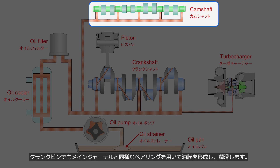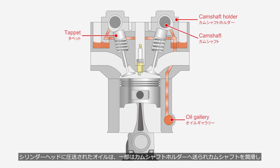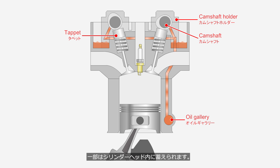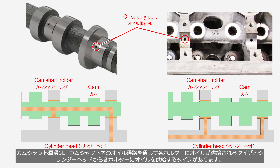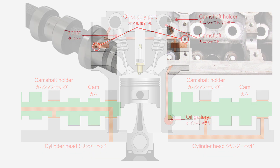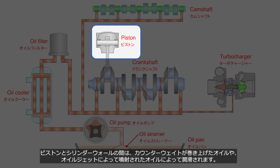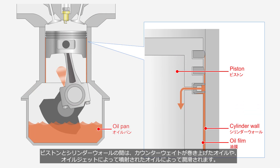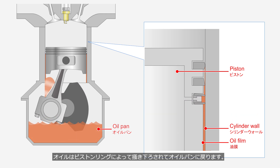The oil in the oil gallery is also sent to the cylinder head. The oil pressure fed to the cylinder head is partially directed to the camshaft holders to lubricate the camshaft, while the remainder is retained within the cylinder head. Camshaft lubrication can be classified into two types: one in which oil is supplied to each holder through oil passages inside the camshaft, and another in which oil is supplied to each holder from the cylinder head. The cam and tappet are lubricated by oil splashed inside the cylinder head, and the piston and cylinder wall are lubricated by oil splashed up by the crankshaft counterweights or sprayed by oil jets. To prevent oil from entering the combustion chamber, it is scraped down by the piston rings and returned to the oil pan.